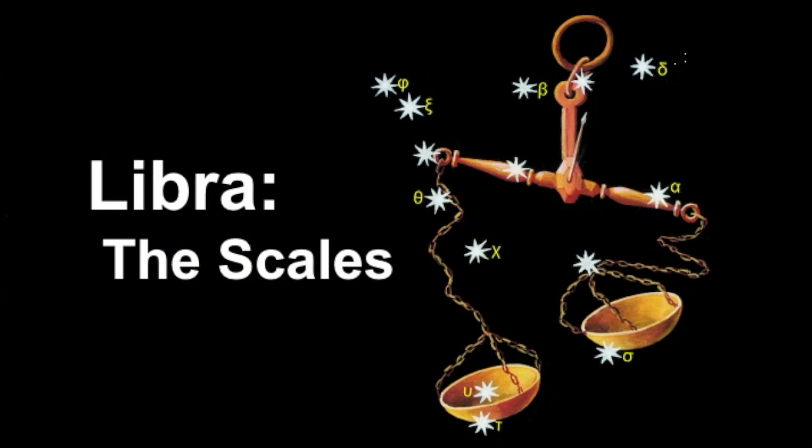Libra is a very ancient constellation that has been identified by the earliest of human civilizations. Its form has changed over the years, and some cultures recognized it as the claws of Scorpius. However, it also has been identified as a balance, as you can see in this picture here. And this is possibly due to the fact that in ancient times, the sun entered the boundaries of Libra during autumn equinox, when the length of the day and night were equal.